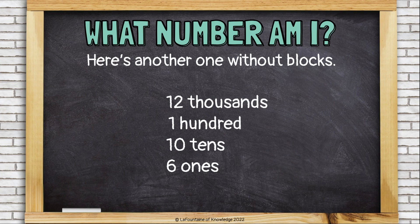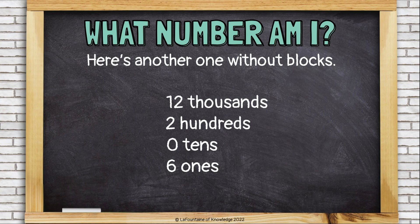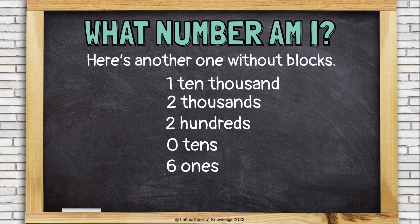This time I have 12 thousands, 1 hundred, 10 tens, and 6 ones. Let's turn those 10 tens into another hundred, leaving 0 tens. And then 12 thousands — that's really a group of 10 thousands and only 2 thousands. So my number is 12,206.